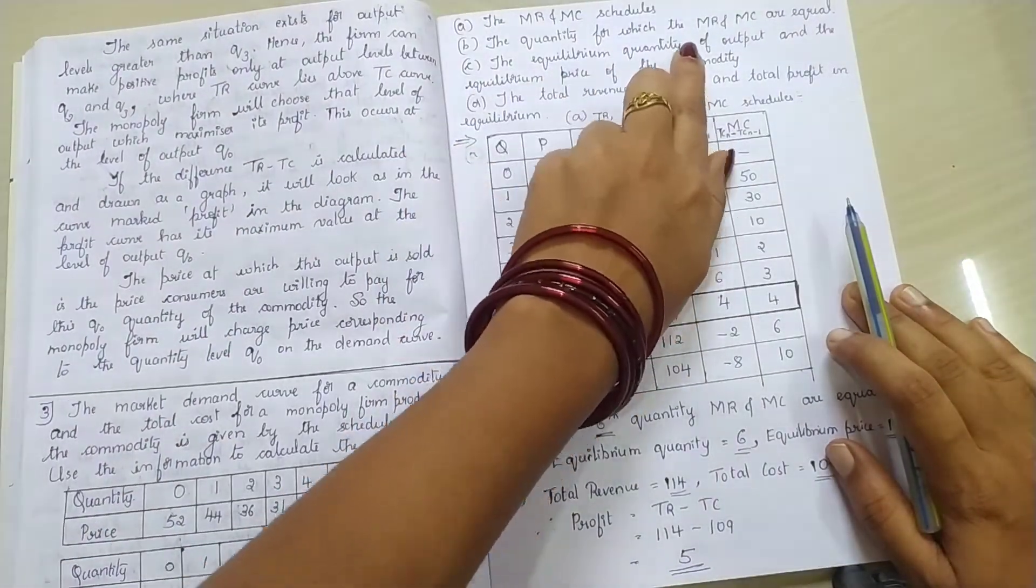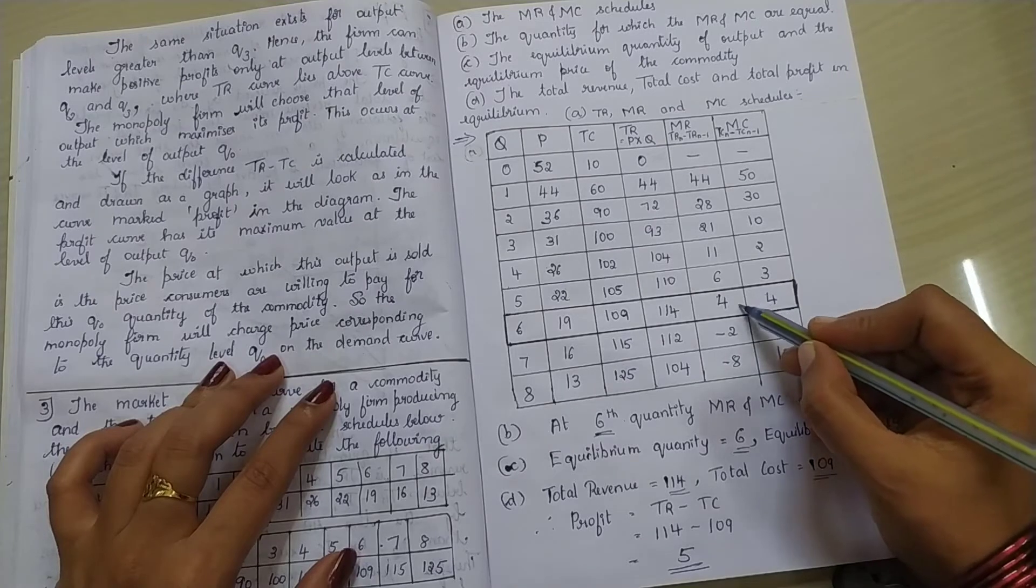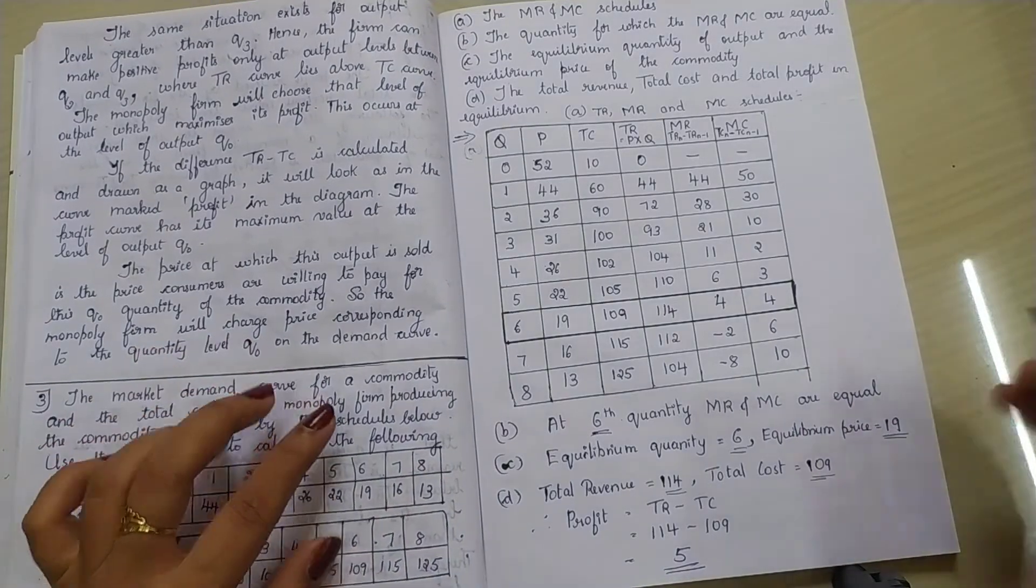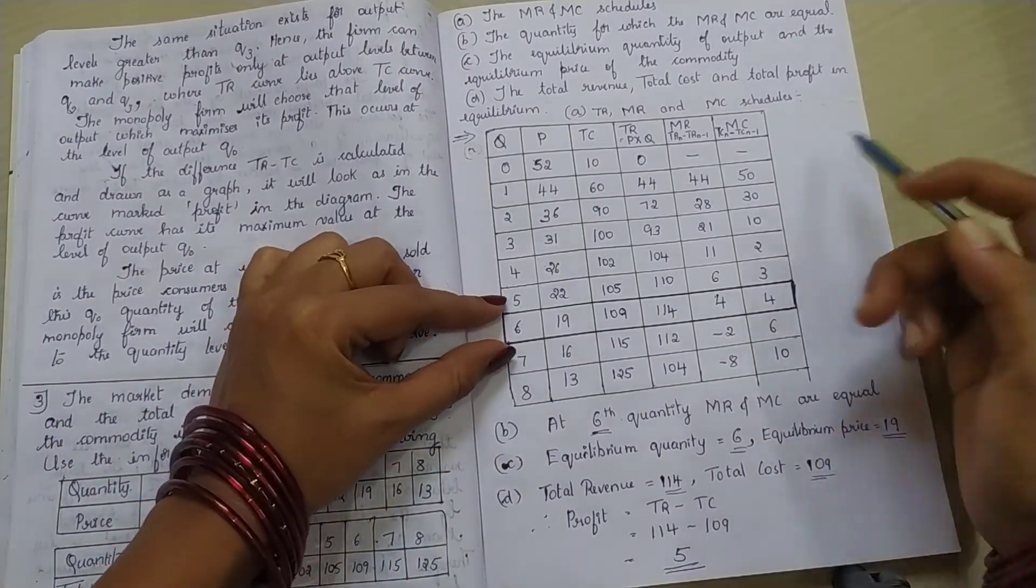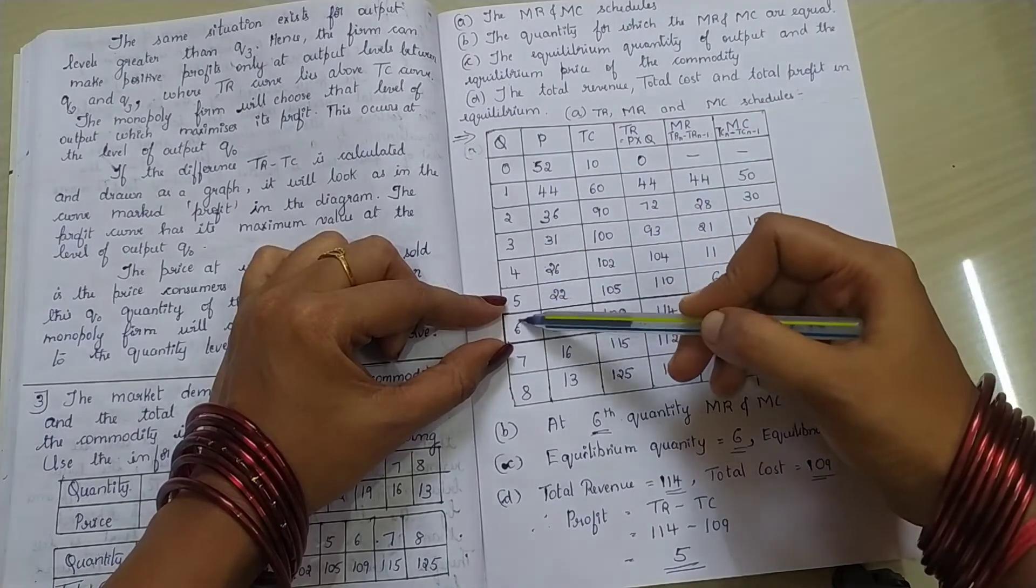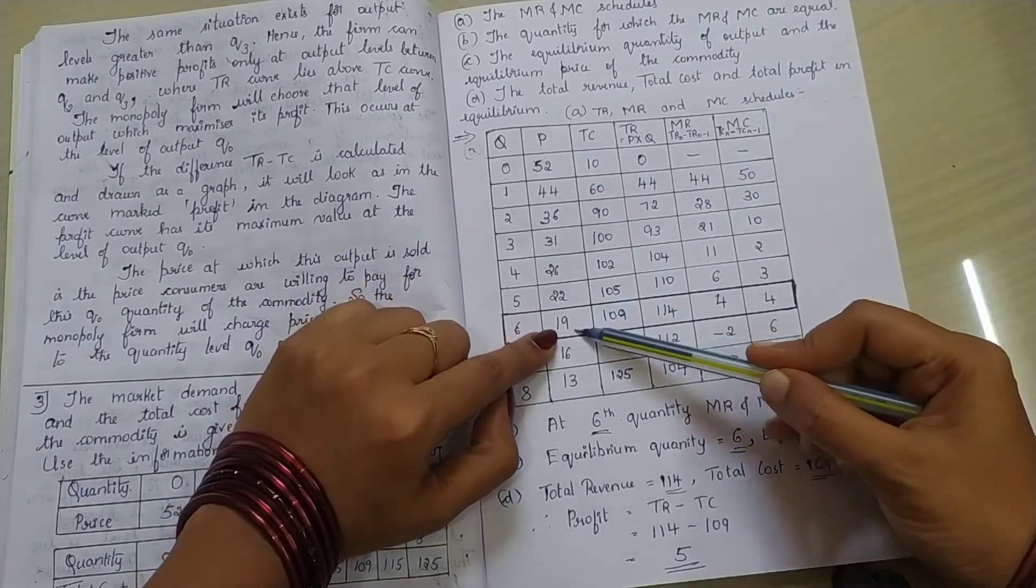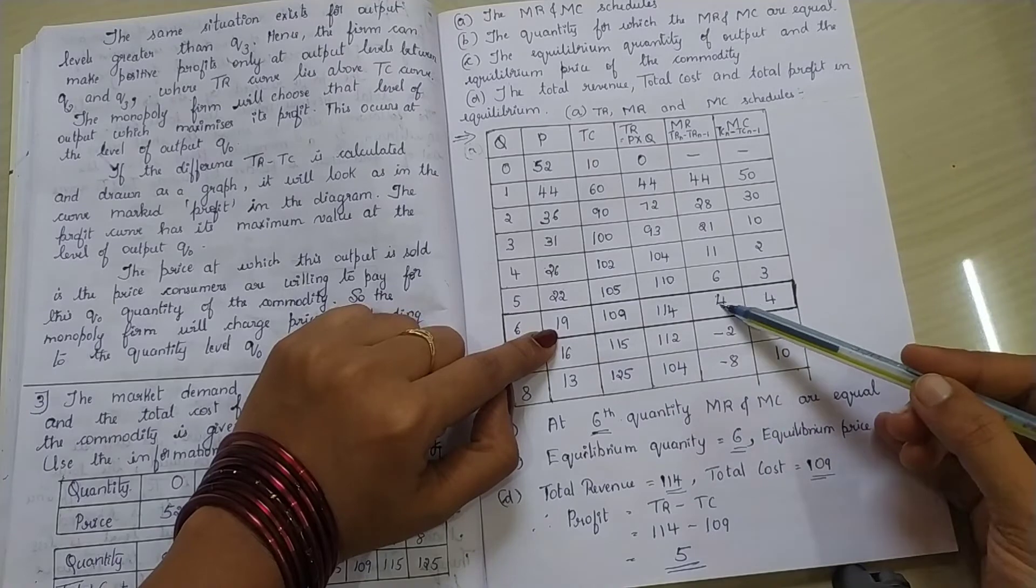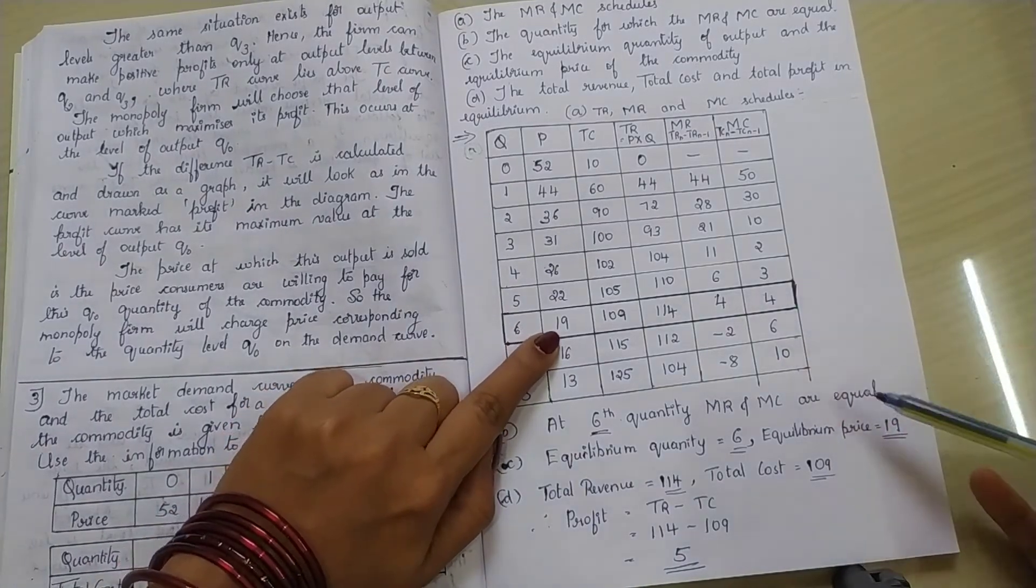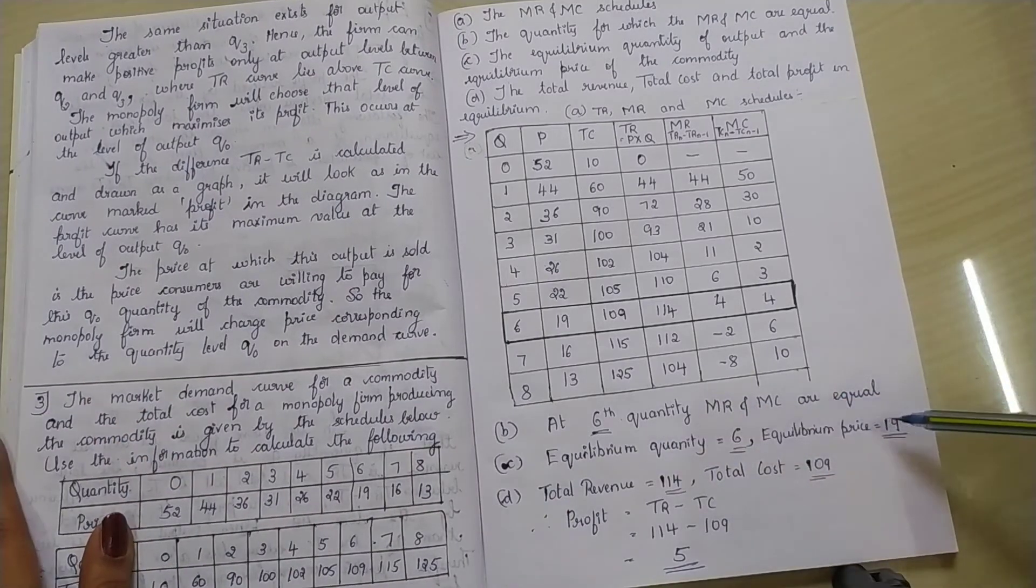Third question is the equilibrium quantity of output and equilibrium price of the commodity. Equilibrium means where marginal cost and marginal revenue are equal. What is the price there, and what is the quantity there? Very simple. We know that in the row where marginal revenue and marginal cost are equal, there is the equilibrium quantity. See, this is Q, quantity column. So, equilibrium quantity is equal to 6. And in the same row, what is the price? The equilibrium price is rupees 19 here. Just find out where MR and MC are equal, note that row. That row's quantity and that row's price, we call equilibrium quantity and equilibrium price.